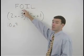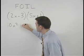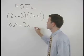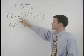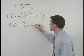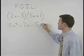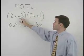product of the outer terms which is 2x times positive 1 or positive 2x plus the product of the inner terms which is negative 3 times 5x or negative 15x plus the product of the last terms negative 3 times